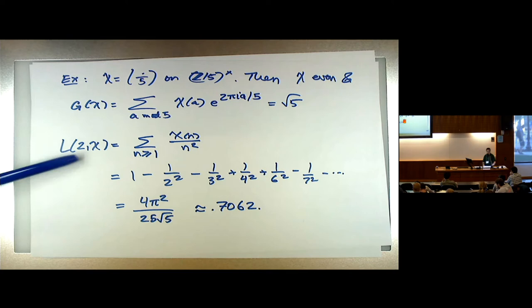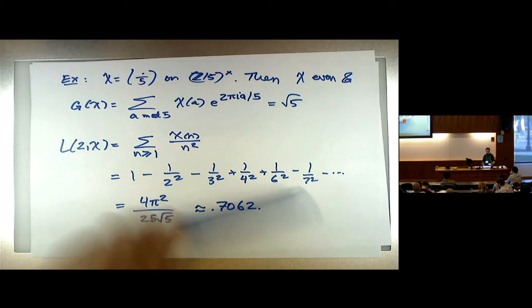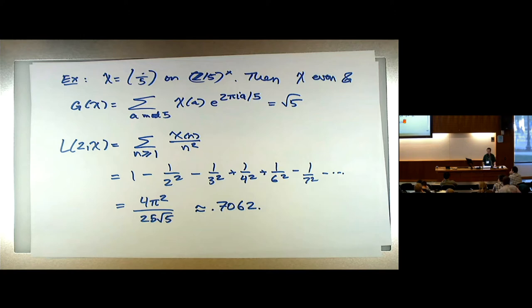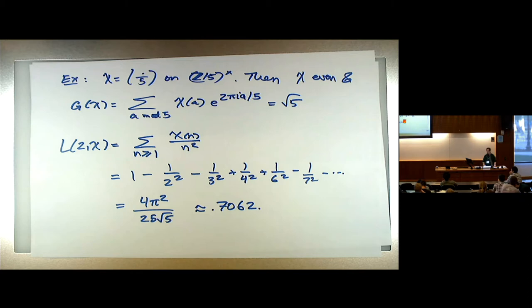If you take the L function of this character at s=2, you get the sum of reciprocal squares with coefficients given by the Legendre symbol values: 1, −1, −1, 1, 0, then 1, −1, −1, 1, 0, periodically mod 5. The value of this L function of this even primitive character is 4π²/(25√5). It's an algebraic multiple of π², not a rational multiple of π².